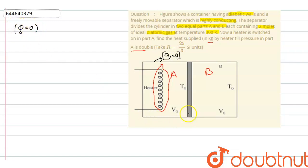Next the separator is highly conducting. That means the temperature here and here will be same. T A and T B.